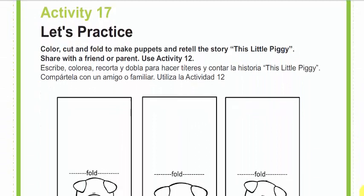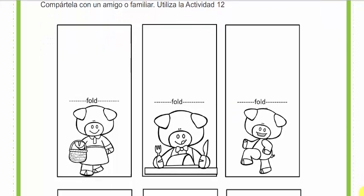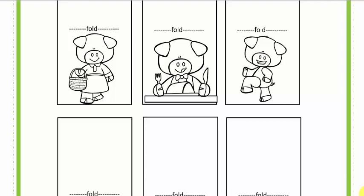Let's continue. Activity number 17: Let's Practice. Color, cut, and fold to make puppets and retell the story This Little Piggy. Share with a friend or parent. Use activity 12. Para esta actividad, vamos a colorear, recortar y doblar para hacer títeres y contar la historia del pequeño puerquito. Compártela con algún familiar o amigo.